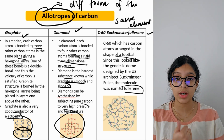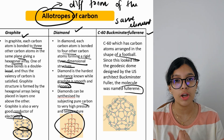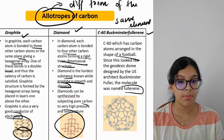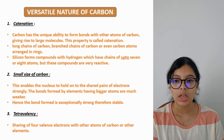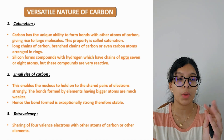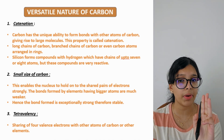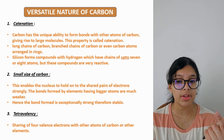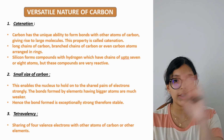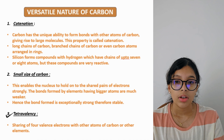Summary of allotropes: graphite — bonded to three carbon atoms, good conductor, slippery and smooth. Diamond — hardest substance, 3D structure, can be synthesized at very high temperature. Buckminsterfullerene — arranged like a football. Now we move to the versatile nature of carbon. The three reasons are: catenation, small size of carbon, and tetravalency.